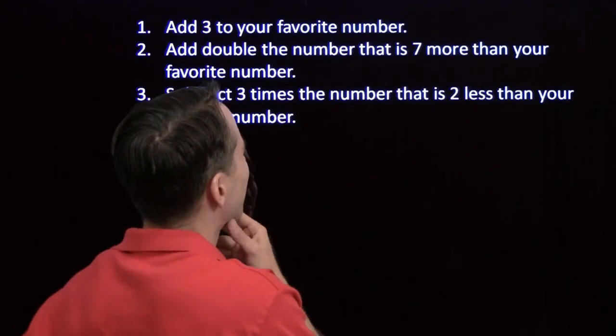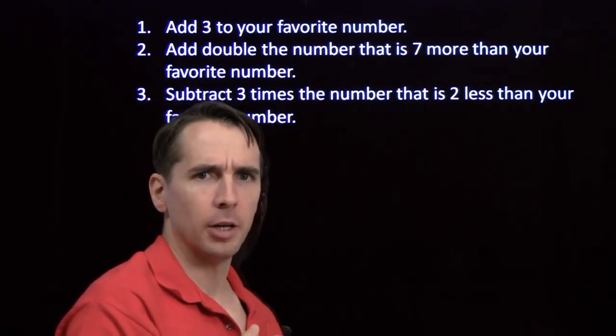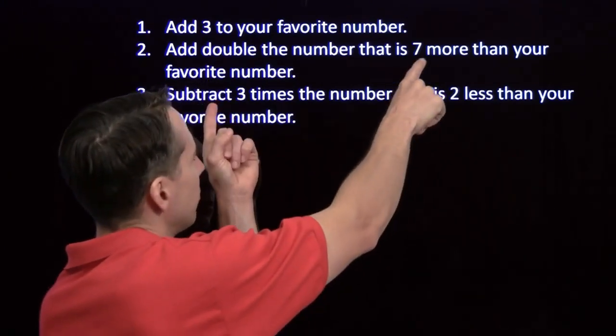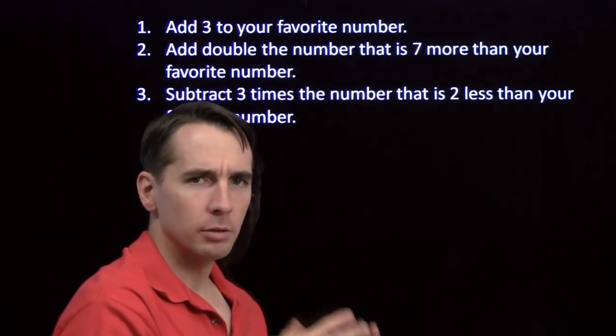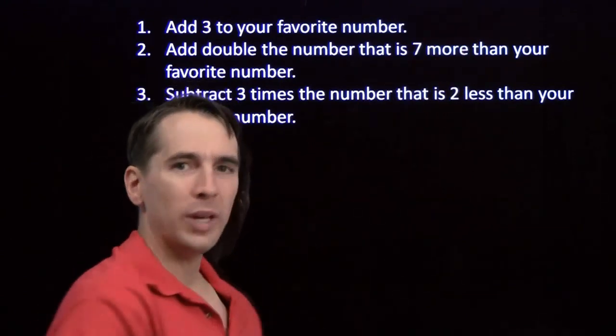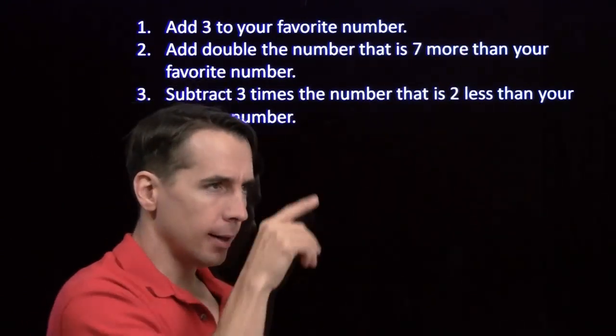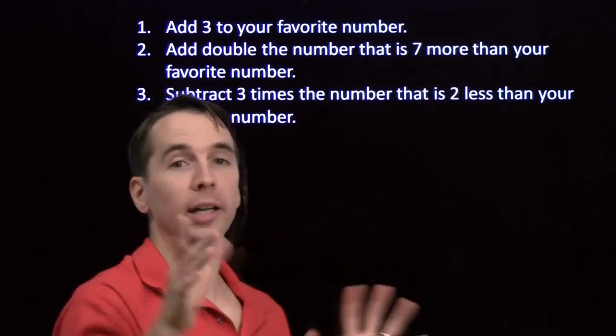Then we add double the number that is seven more than our favorite number. So let's see, we take, add seven on to our favorite number, double that, get a new number, and then we add what we get there to what we had at the end of step one. All right, I'll do that too. I'm going to carry. Okay, got it.